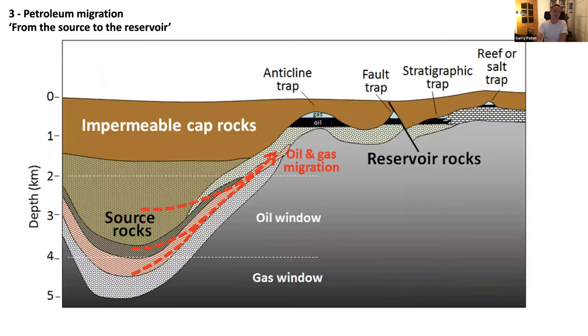The migration: you've got the source rock down here. It's reached a particular depth, what we call the kitchen, where the geothermal gradient is high enough. It's migrated upwards and found a place where it's trapped, and it's reservoir rentable. It cannot go any further. You have an impermeable cap rock.